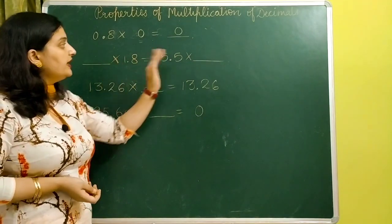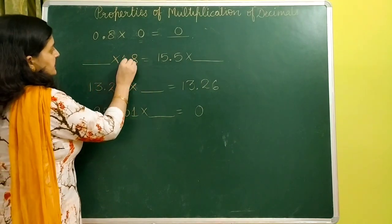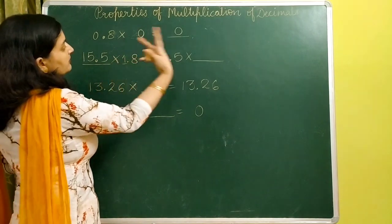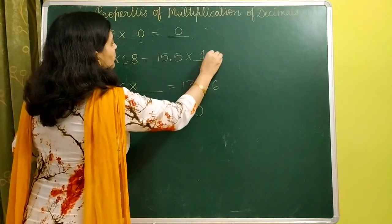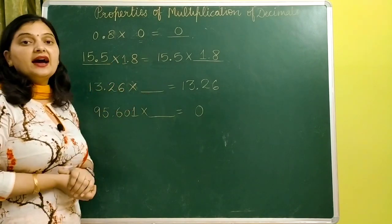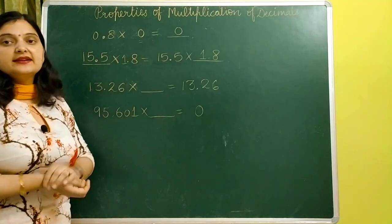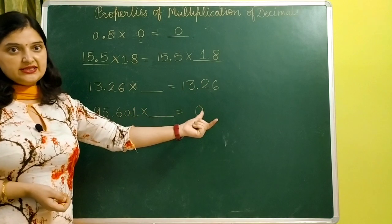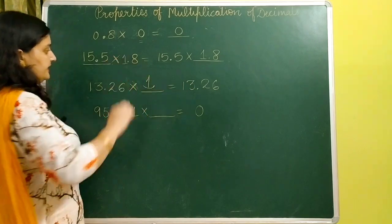1.8 is present, so we need to find which one is absent. We can say that 15.5 multiplied by 1.8 — we now have to write 1.8 on the other side. This is the first property: whenever we multiply two decimal numbers, the product remains the same regardless of order. The next one: 13.26 multiplied by something equals 13.26 — it means we are multiplying it by 1.